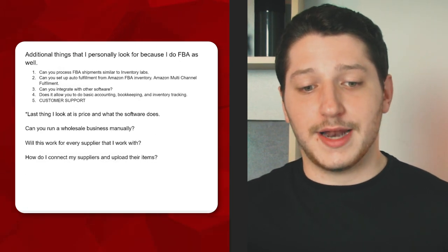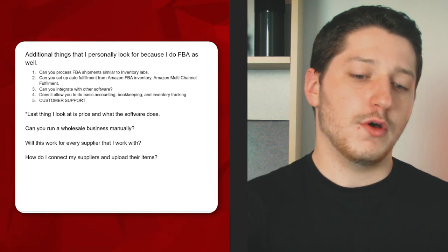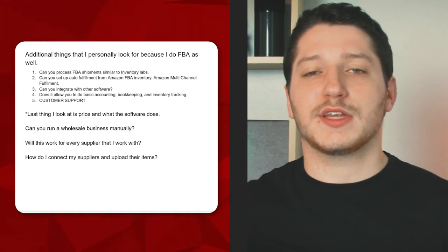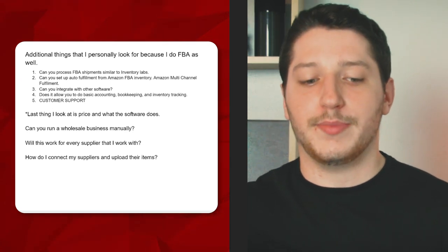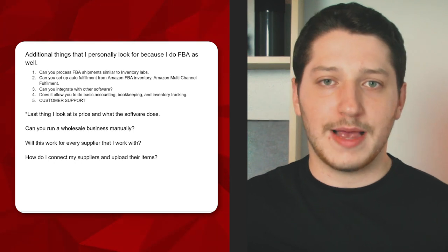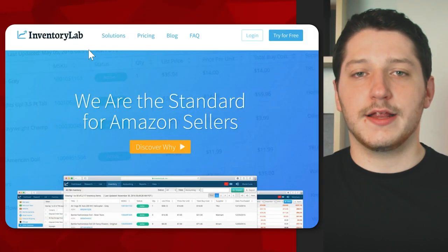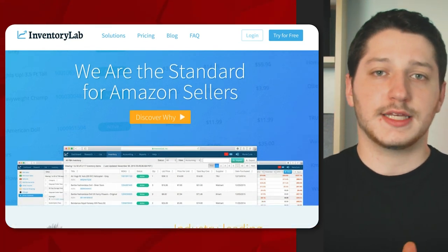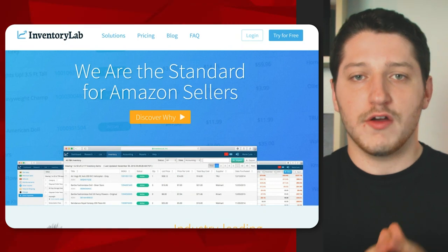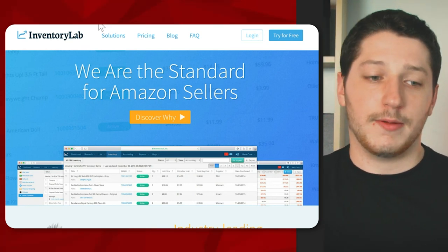There are additional criteria I personally look for because I also do FBA. The first bonus criterion: can the software process FBA shipments, similar to Inventory Labs? I needed to be able to import listings from my wholesale supplier, select which ones I want to send into Amazon, and then create the direct Amazon shipment within the software — including labels — without having to go to Seller Central and re-enter all the information.